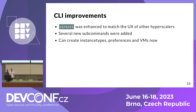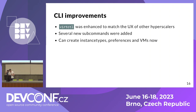Talking about the command line, we also improved the command line of KubeVirt. The command line utility is called virtctl, and it was enhanced to match the user experience of other hyperscalers. Several new subcommands were added. Now you can create an instance type, a preference, and a virtual machine with virtctl, which was not possible before. And now I'm handing it over to Andrej to introduce you to some of the subcommands.